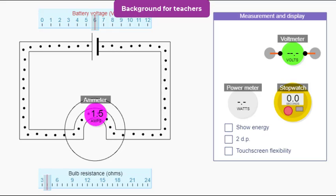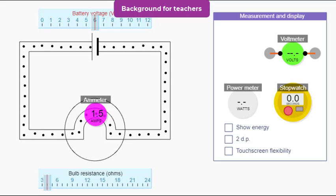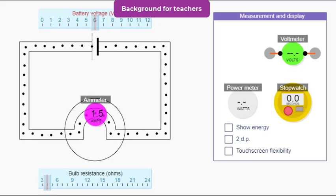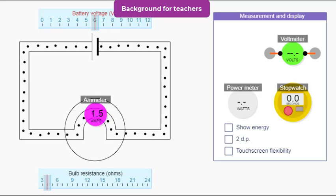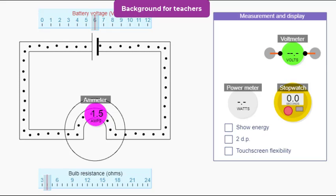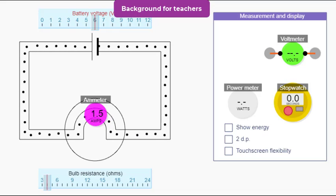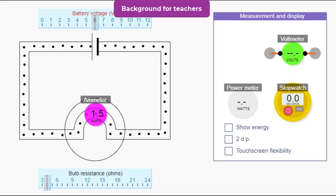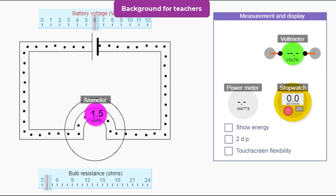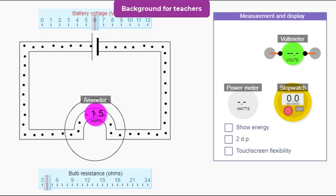When we talk about the size of a current, we always have to remember that current is measured at a point on the circuit. Let's look at charge equals current times time first. This says that the amount of electric charge that flows past a point depends on how fast the charges are moving — the current — and how long the time is. Big current for a long time means lots of charge. We'll choose the current and the time and count the charges.